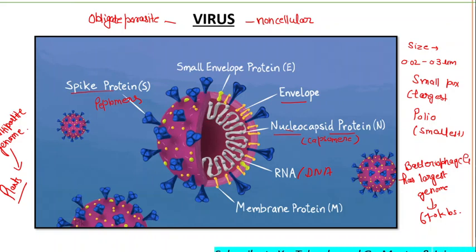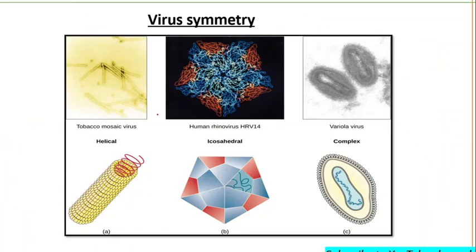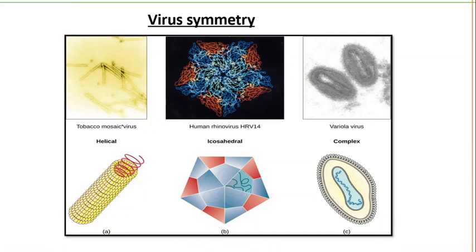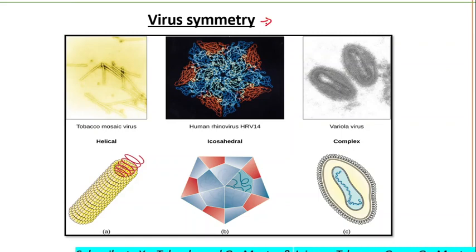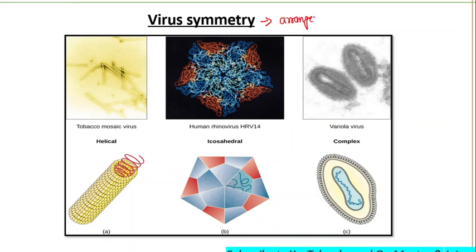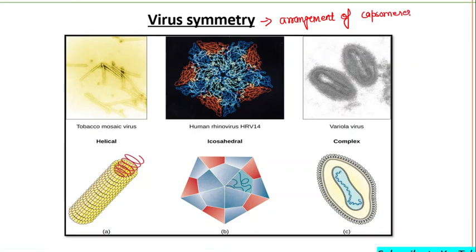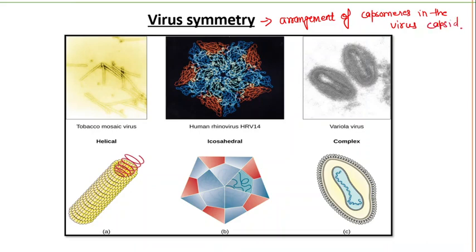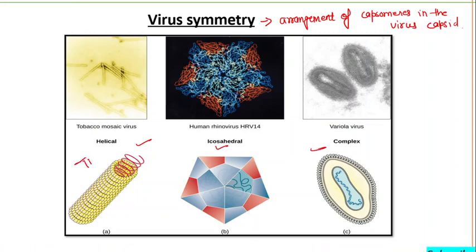Types of viral nucleic acid include single-stranded DNA and single-stranded RNA. Regarding shape and symmetry — all viruses have a nucleocapsid, and the term symmetry refers to the arrangement of capsomeres in the virus. Capsomeres may be arranged in an icosahedral, helical, or complex pattern.